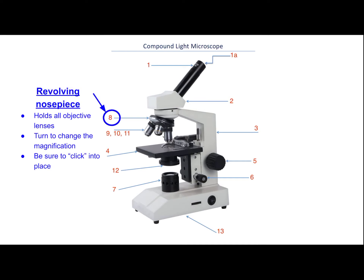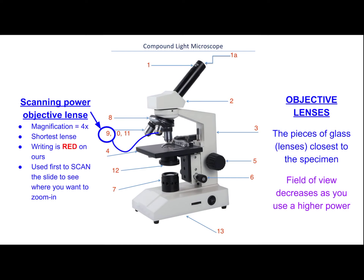There are three lenses on the revolving nosepiece. The first is the scanning power objective lens — it's the shortest. All three are objective lenses, meaning they are closest to the specimen. We start with the one that has the lowest magnification. On our scopes, the scanning lens has red writing. As its name suggests, you use it to scan the slide to find where you want to zoom in. The field of view decreases as you go to higher power, so use scanning power first, place your target in the center, then move to a higher power.